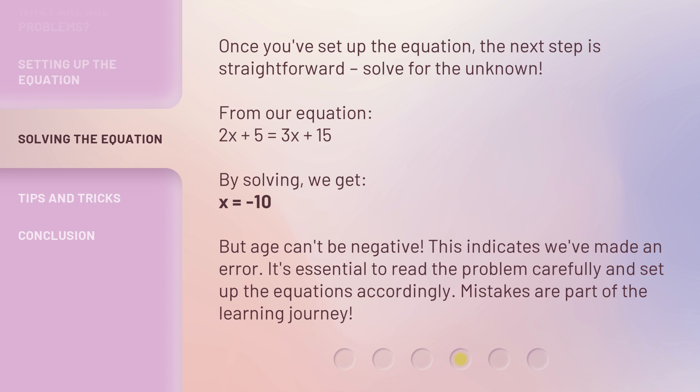But age can't be negative. This indicates we've made an error. It's essential to read the problem carefully and set up the equations accordingly. Mistakes are part of the learning journey.